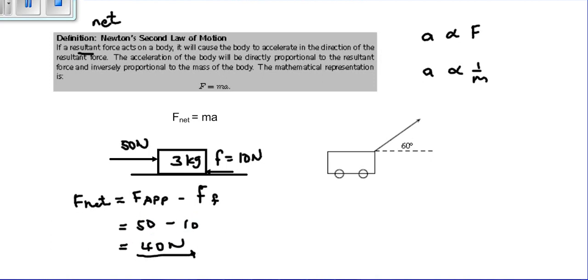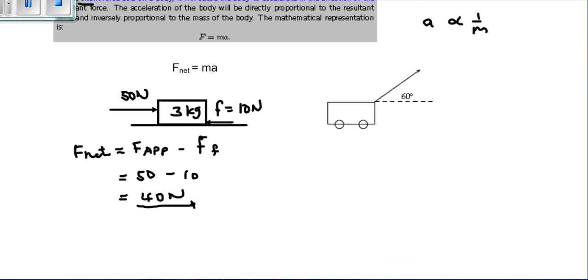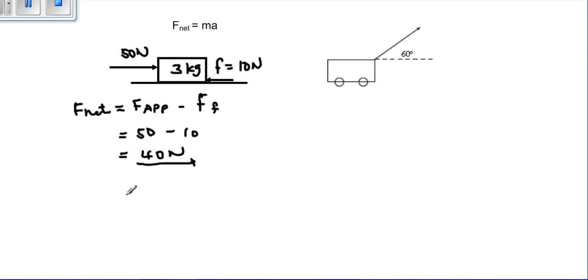If you look at this diagram, to work out our acceleration, we say F net equals ma. Our net force is 40 newtons, and the mass of the object is 3 kilograms. If we divide by 3 both sides, we see that 40 divided by 3 will give us 13.3.